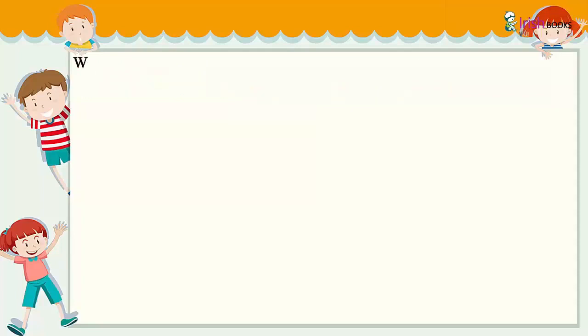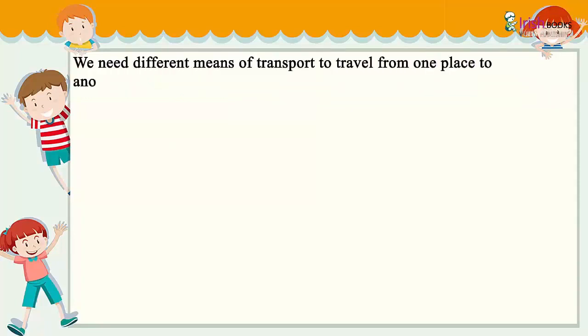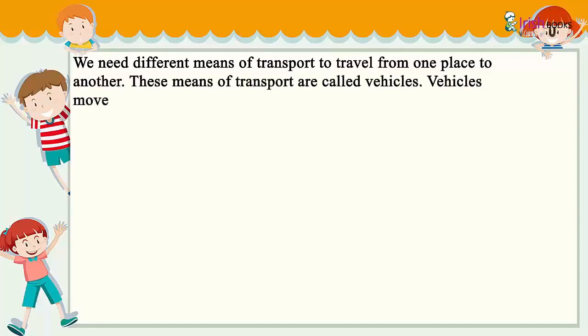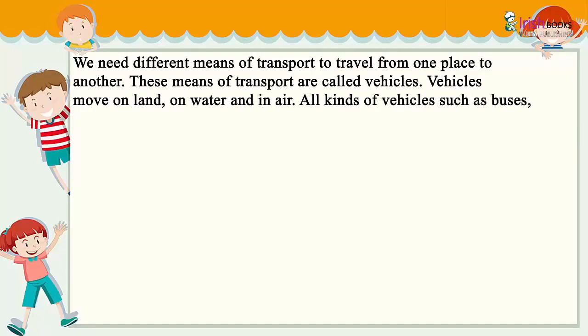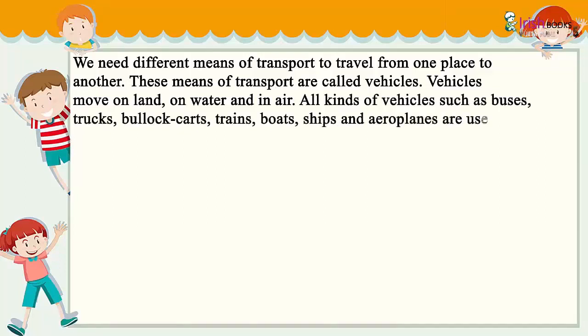We need different means of transport to travel from one place to another. These means of transport are called vehicles. Vehicles move on land, on water, and in air.